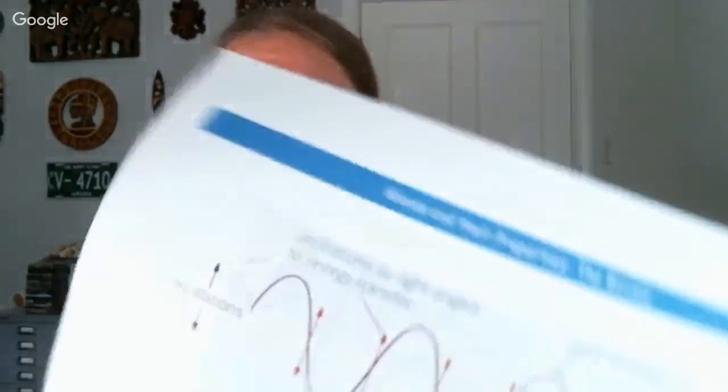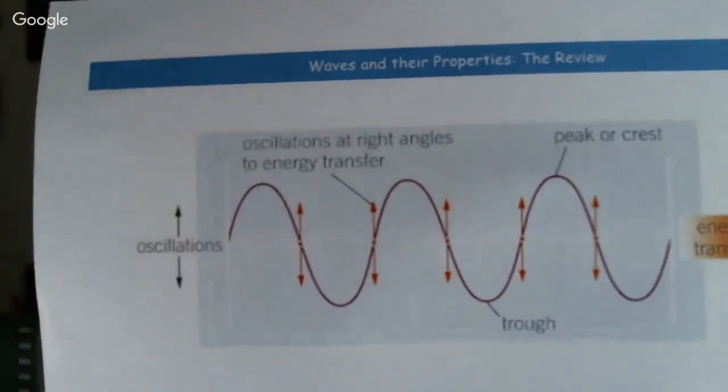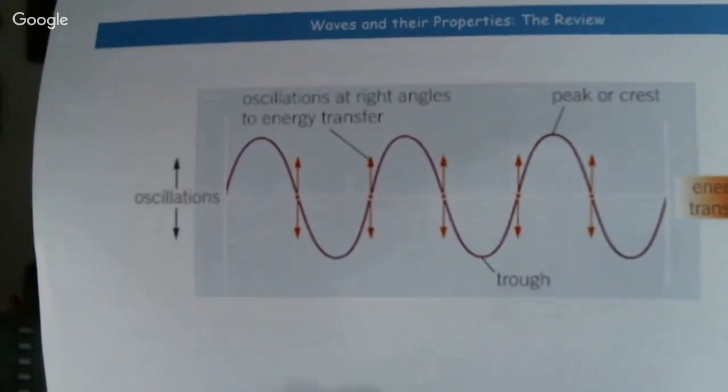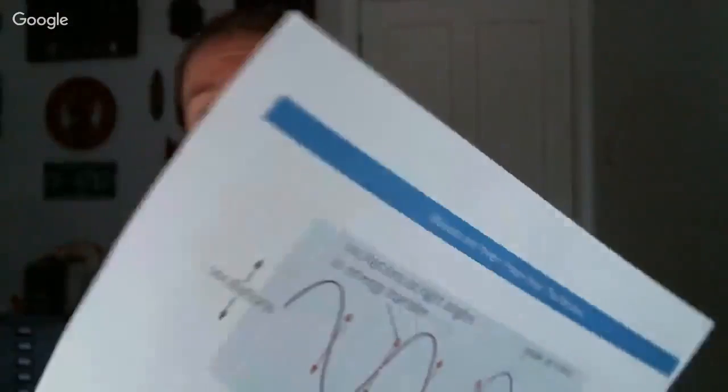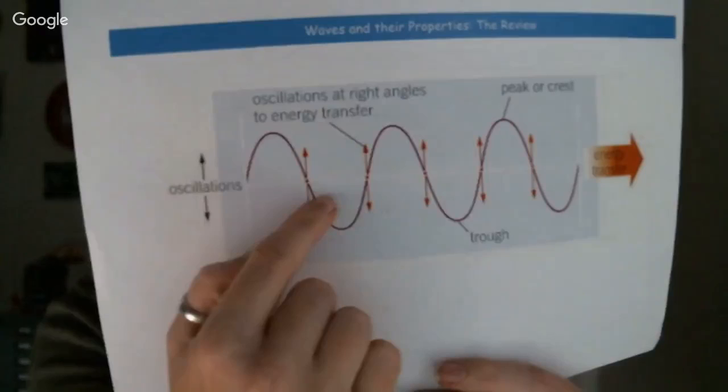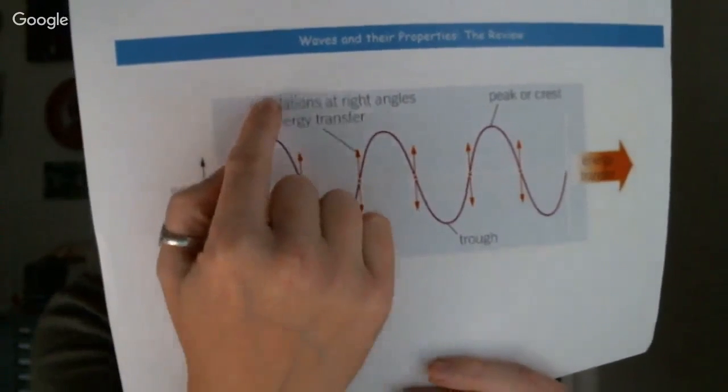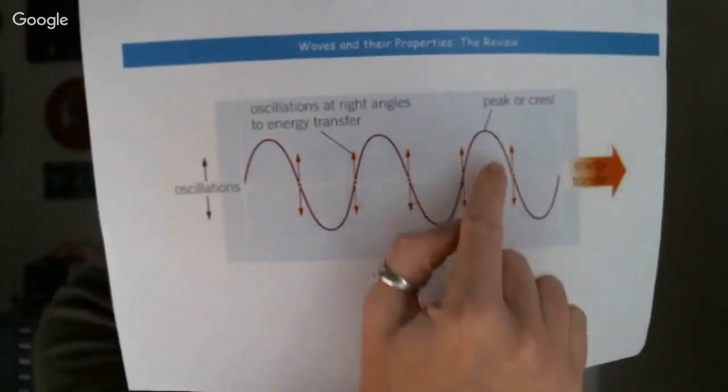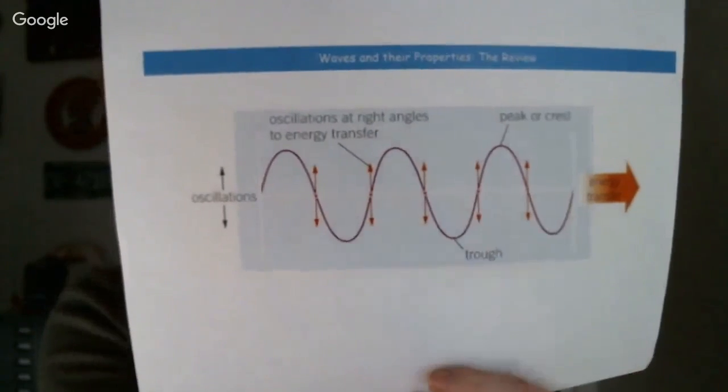We can divide waves into two categories: transverse or longitudinal. In transverse waves, the vibrations are at right angles to the direction the wave is traveling. Looking at the diagram, the wave is traveling this way and the vibrations are up and down, so they're at right angles to the direction of travel.